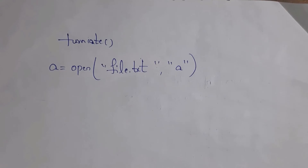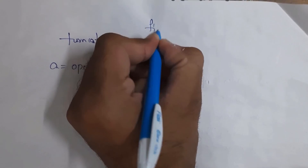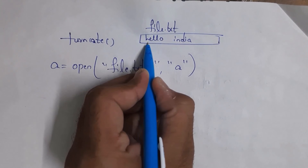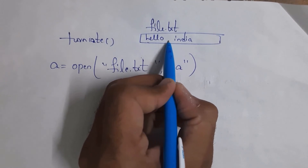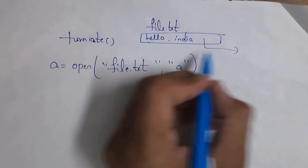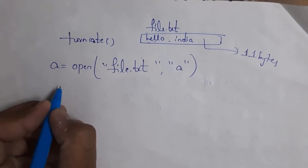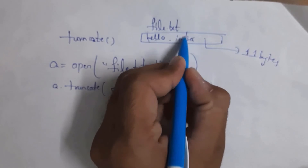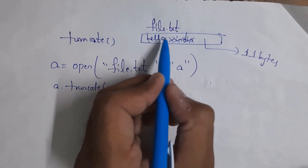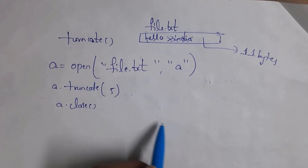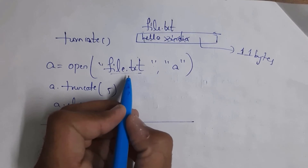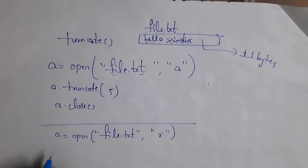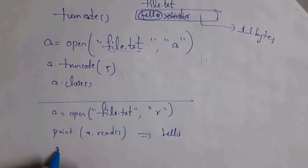Next, the truncate method. Truncate is used to change file size. For example, file.txt contains 'hello India'. Each character occupies one byte of memory, so 'hello India' is 11 characters total — 11 bytes. Now I want to change this file size to 5 bytes, so write a.truncate(5). It changes the file size to 5 bytes, keeping only 'hello' and removing the remaining characters. Write a.close(). Now when you open file.txt in read mode and print(a.read()), you will get output 'hello', because we changed file.txt to 5 bytes.